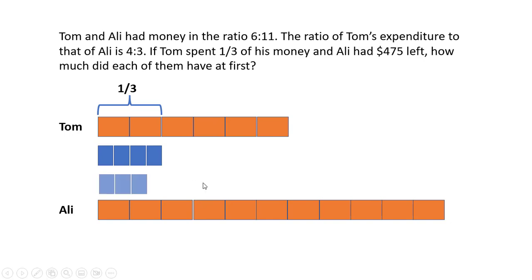Ali's expenditure will be 3 units because both of these are of the same size units. Now Tom spent one third of his money and Ali had $475 left. To solve that, first we are converting all these units that we have here into the size of this.